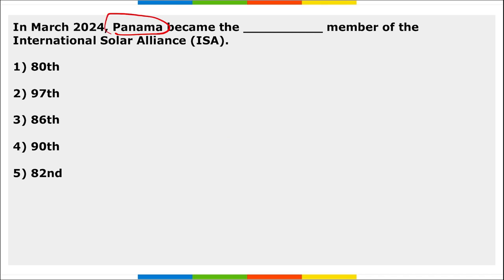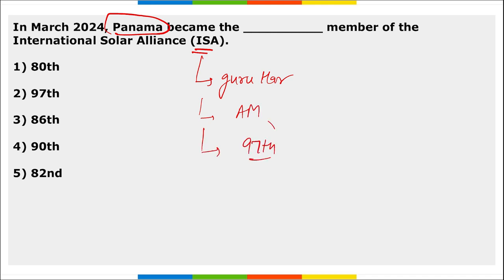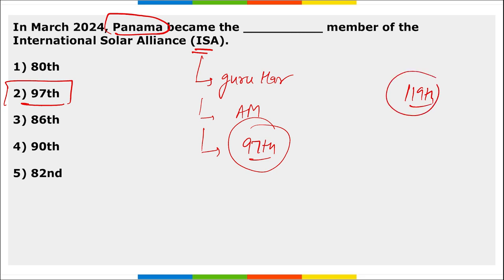Next: Panama became the 97th member of the International Solar Alliance. The International Solar Alliance headquarters is in Gurugram, Haryana, and the Project Director is Ajay Mathur. Panama became the 97th country to join the International Solar Alliance, and Malta is the 119th signatory country that can potentially join it.